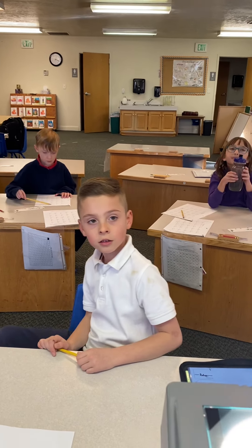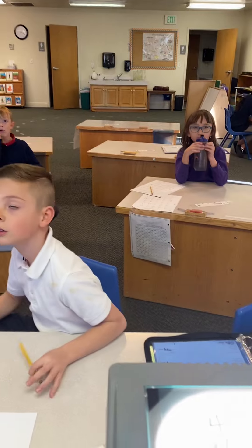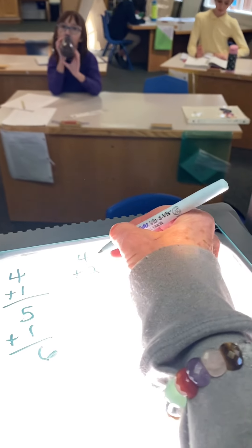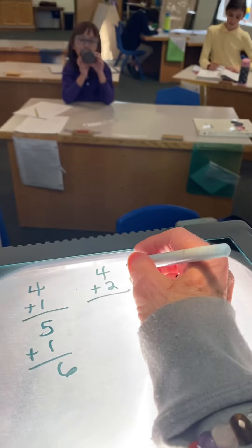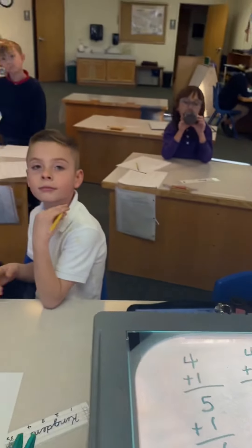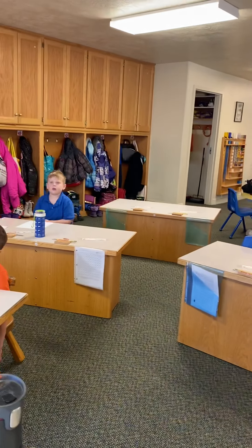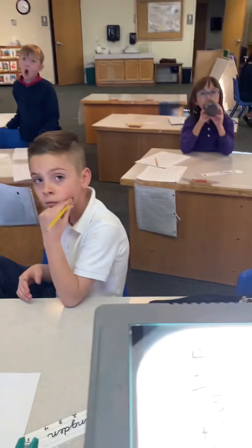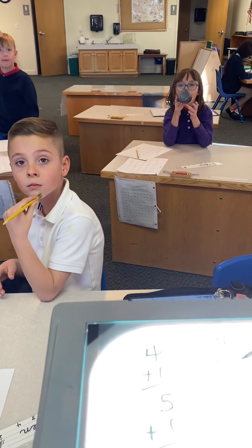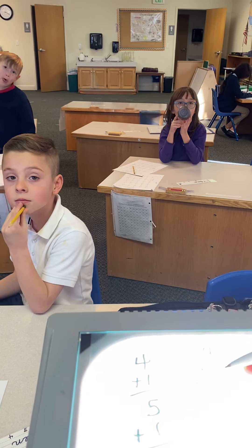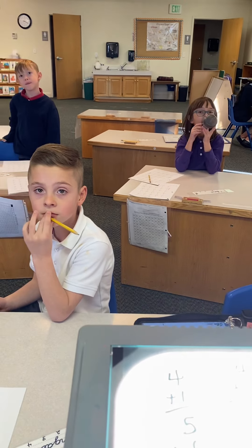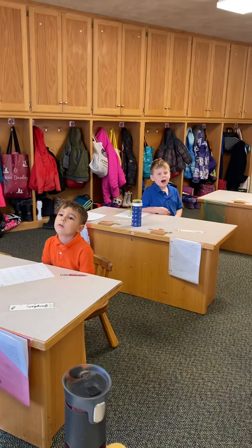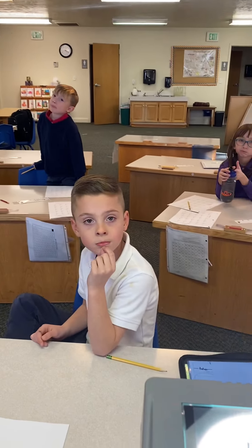Six. So when you see a number like this, you can think in your mind. Four and one more is? Six. Four and one more is? Five. Four and one more is? Five. And one more? Six. Woo!